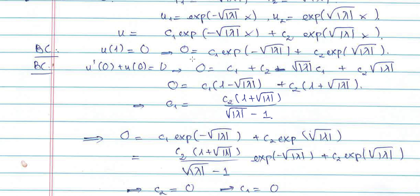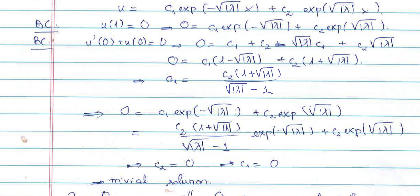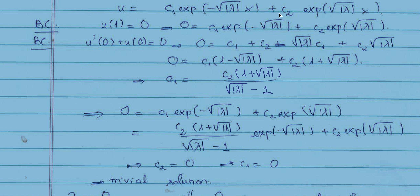I still have the first equation, so I replace the expression I found for c1 into that equation. After substituting everything, I get 0 = c1*exp(-sqrt(|lambda|)) + c2*exp(sqrt(|lambda|)). Replacing c1 and grouping, I get c2 times something equals zero, which means c2 = 0. Replacing back gives c1 = 0 as well. So in this case c1 and c2 are both zero, giving the trivial solution u = 0.